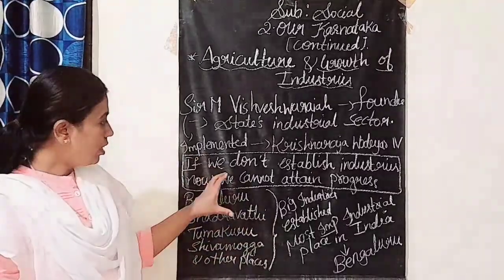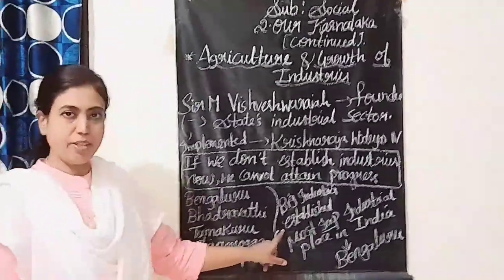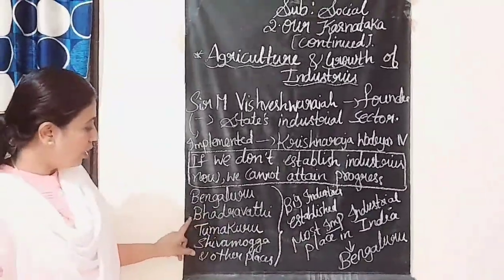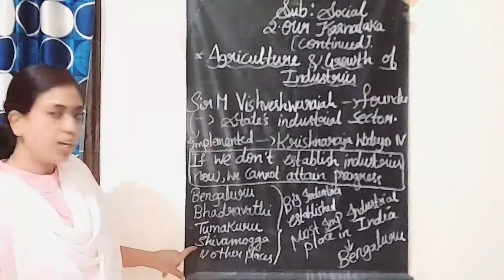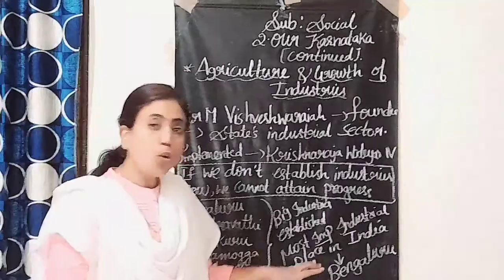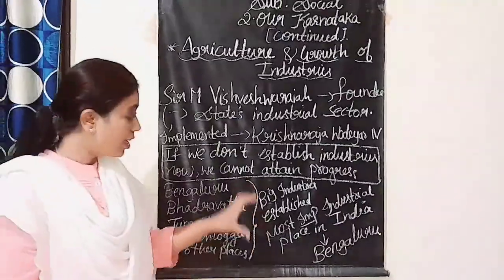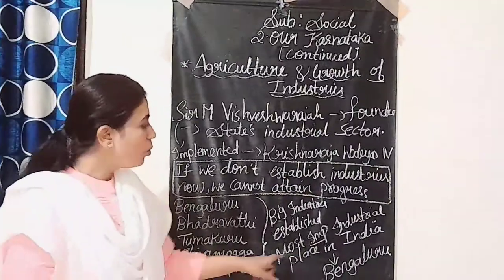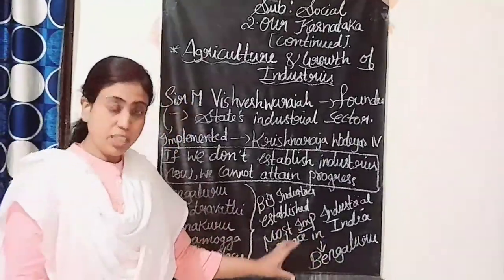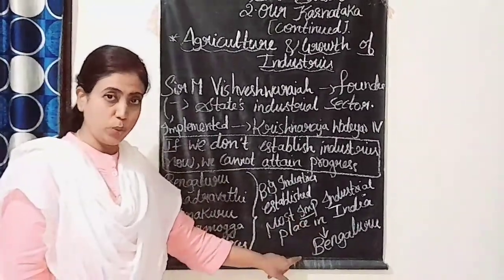With this implementation, big industries were established at Bengaluru, Bhadravathi, Tumkuru, Shimoga, and other places in the Bengaluru division. Bengaluru is the most important industrial place not just in Karnataka, but in all of India.